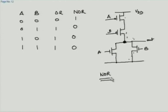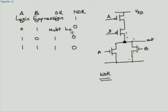We can generalize this logic. The rule says you must write a logic expression that is inverting — it must have a bar on top. For inverting logic, you can implement a single-gate. If you do not want inverting, you put an inverter after that. For example, if you want OR logic, make a NOR and put an inverter after it. If you want AND, take a NAND gate and put an inverter after it.